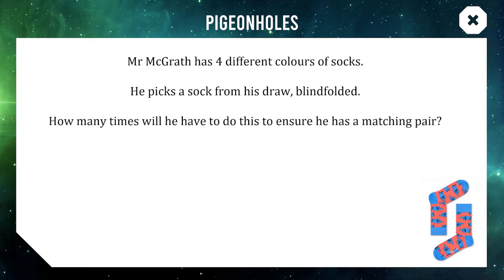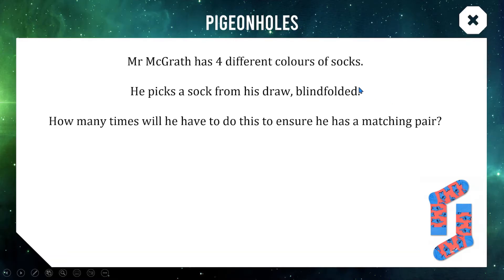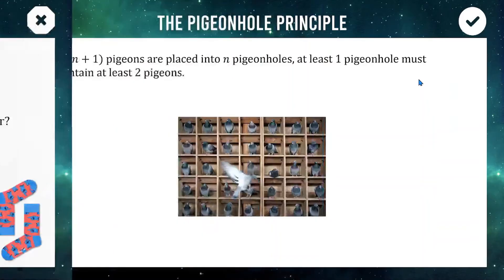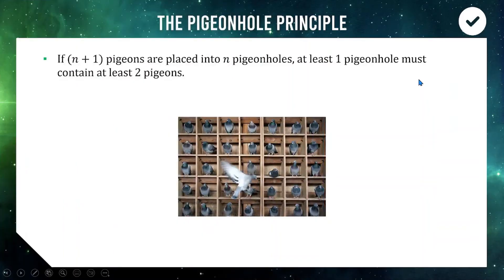Let's say I'm trying to get a pair but getting really unlucky — each of my first four picks is a different color. On my fifth pick I have to get one of the four colors I've already picked, so five is the minimum number of picks needed to ensure I have at least one matching pair from the drawer.